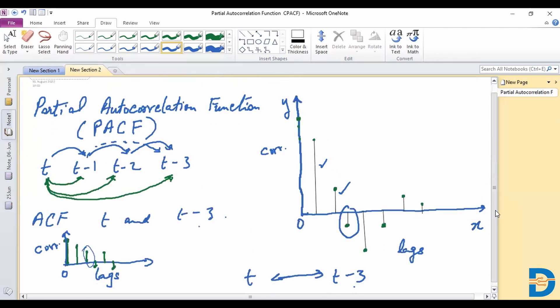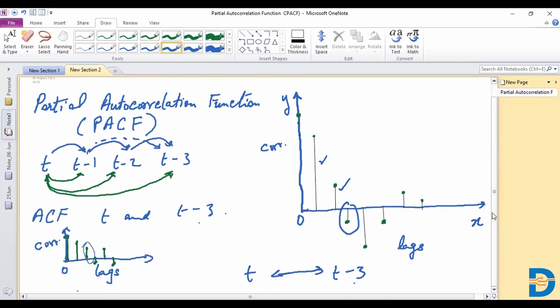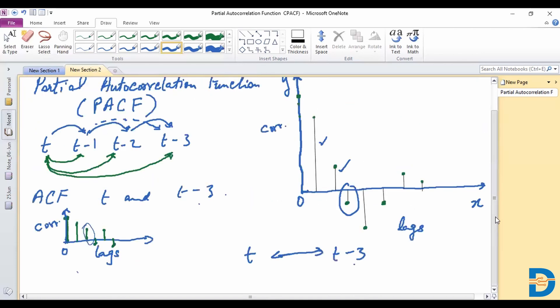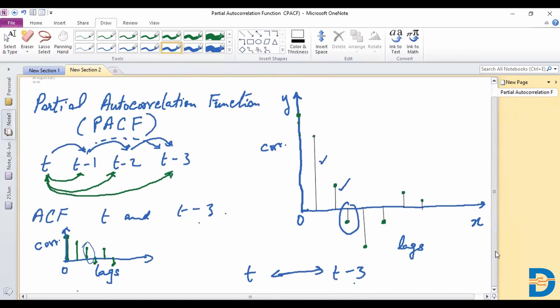That's the idea of plotting a partial autocorrelation function. So when we take a look at these plots, ACF is something handy for us to get the order of a moving average model.